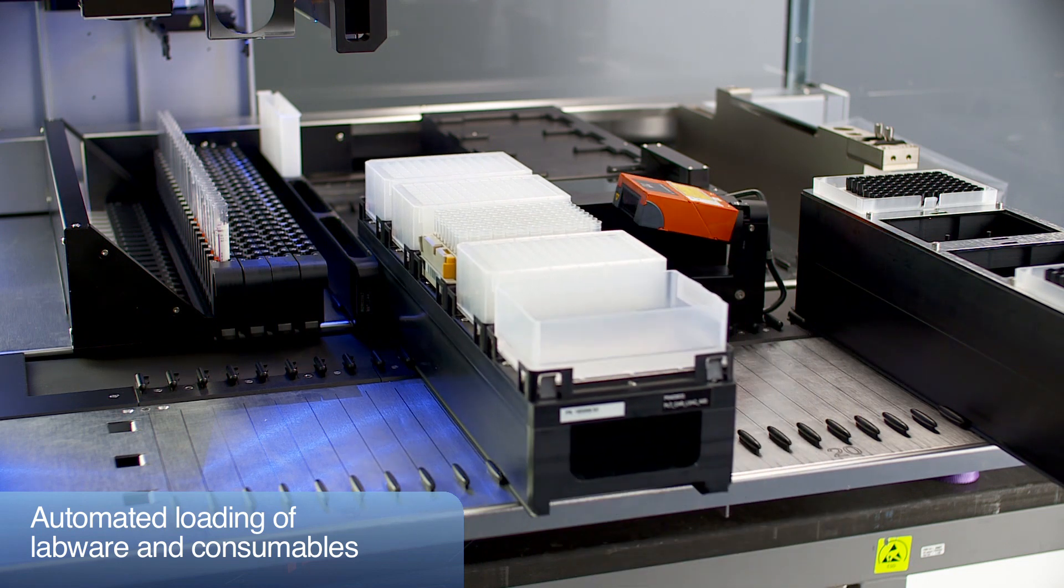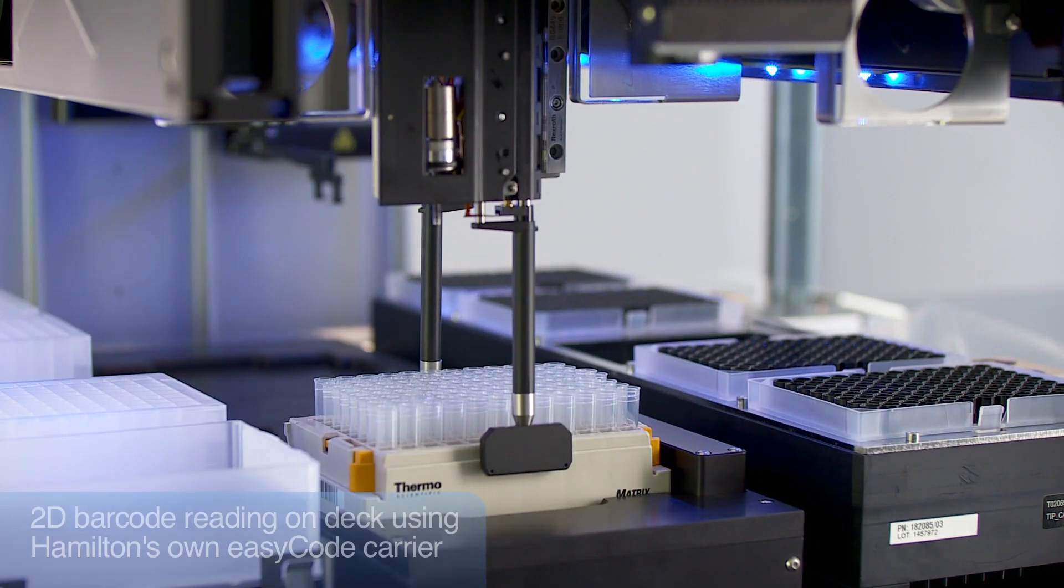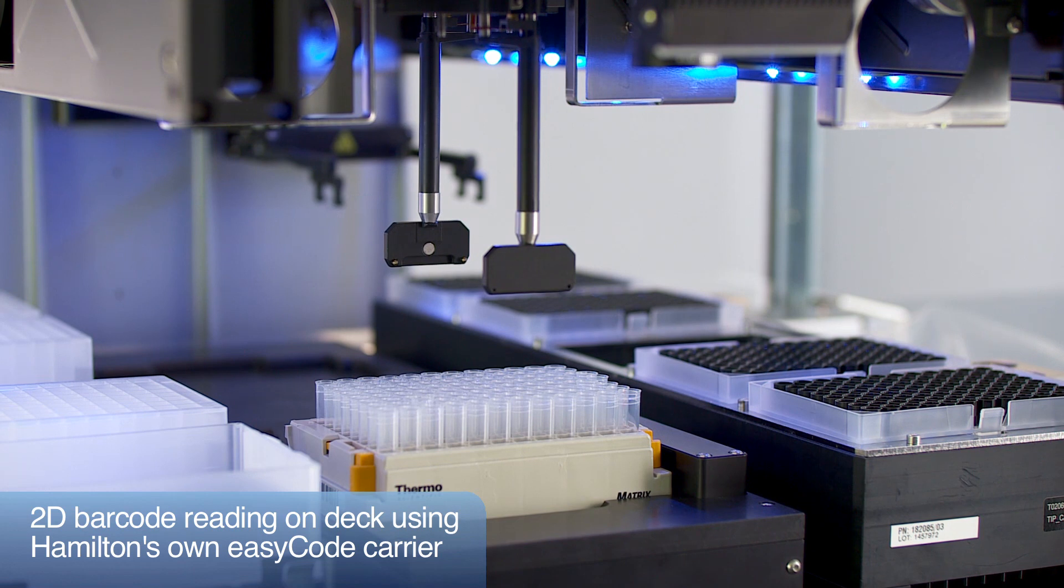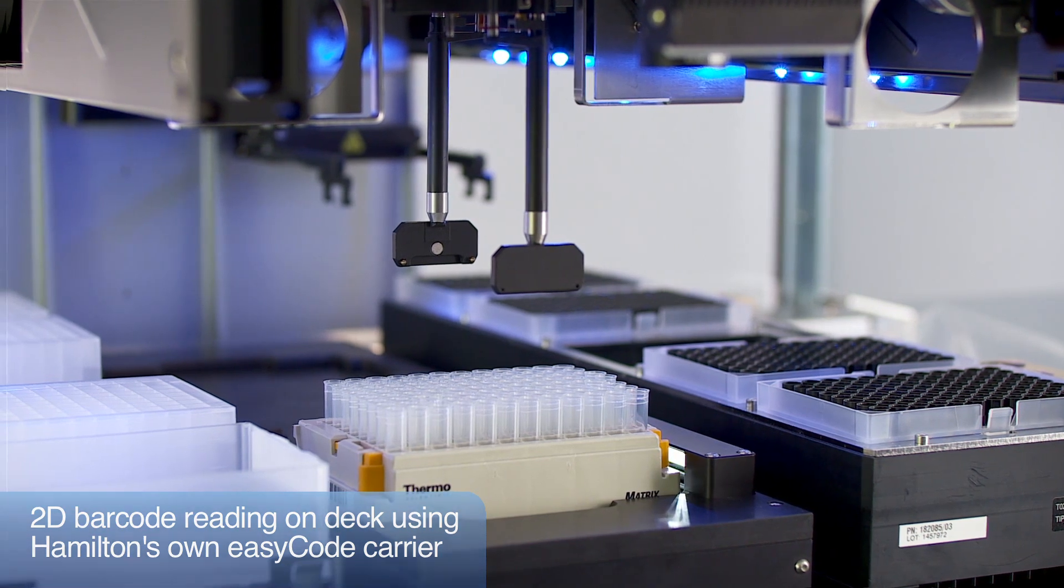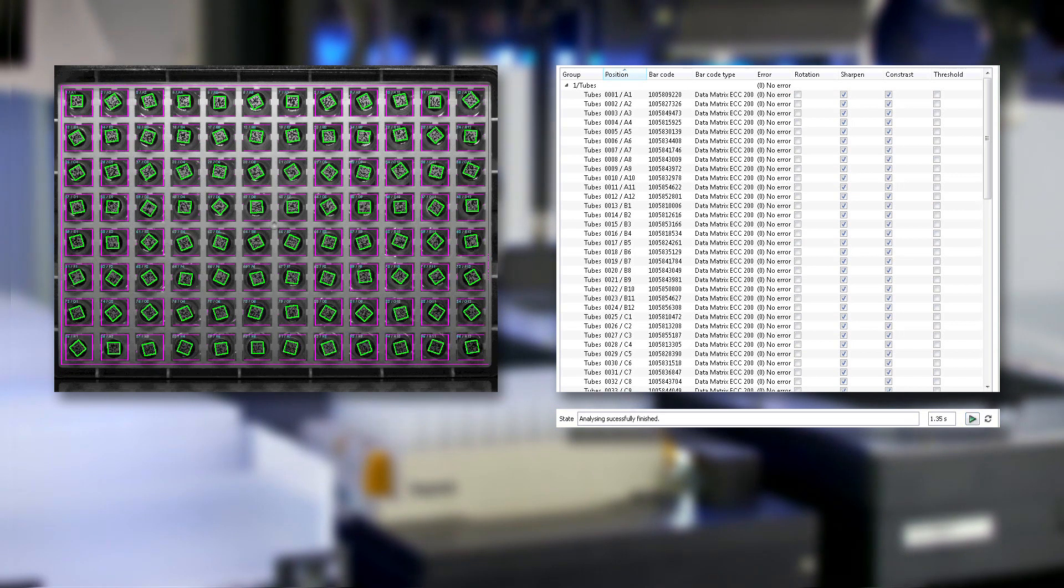Target labware as well as consumables are also automatically loaded. The space-saving integration of Hamilton's EasyCode 2D barcode scanner allows a cost-efficient option for on-deck target container identification.